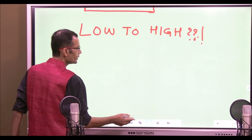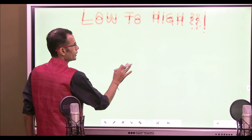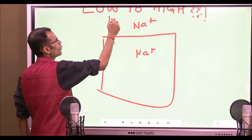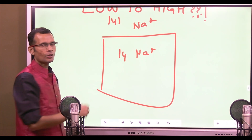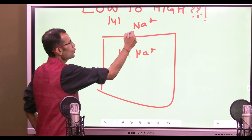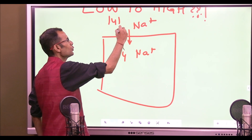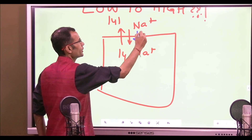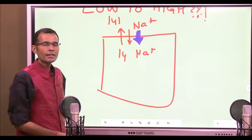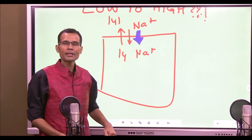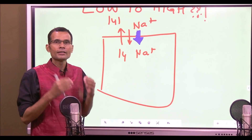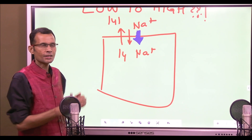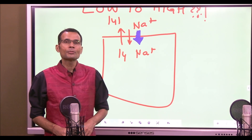Let's say sodium is inside and outside the cell — 141 milliequivalents per litre on the outside and 40 milliequivalents per litre on the inside. It can go from high to low or low to high, but net transport will always occur from high to low, i.e., outside to inside. For example, if 100 ions are coming in and 4 ions are going out, then 96 ions net are transported from high to low concentration.